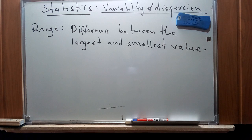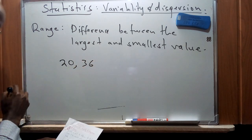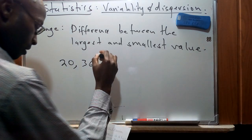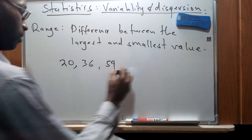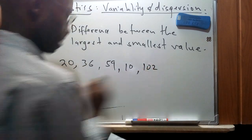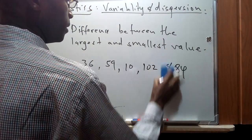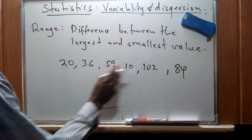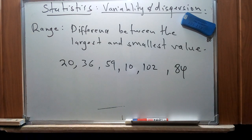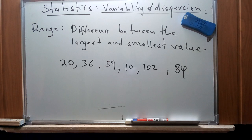Let me give an illustration so we can understand this concept. We have this set of data which we introduced in a previous video as ungrouped data: 20, 36, 54, 10, 102, and 84. So we have six sets of data, which we refer to as n.